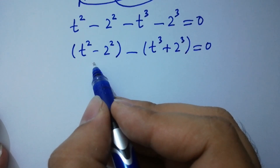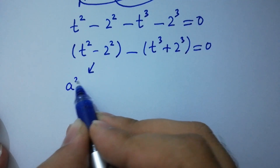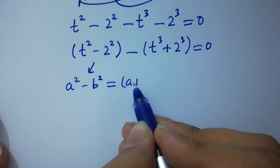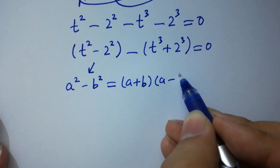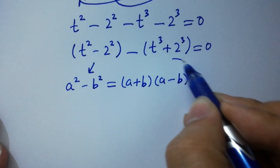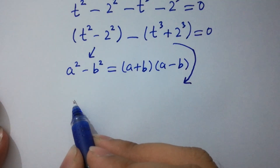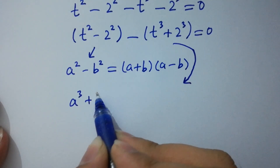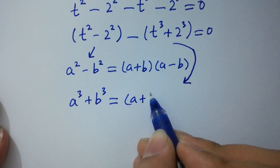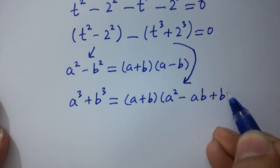I am going to apply the formula. This is the formula of a squared minus b squared, which is equal to a plus b times a minus b. And here t cubed plus 2 cubed has the formula of a cubed plus b cubed, which is equal to a plus b times a squared minus ab plus b squared.